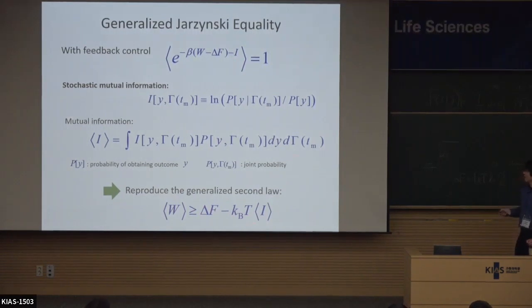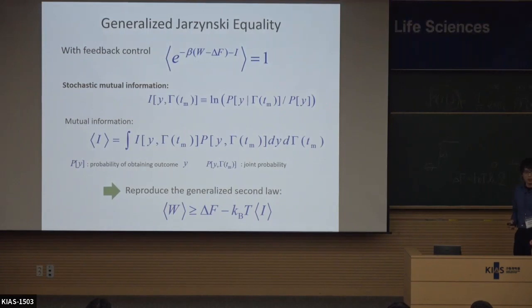We can say that this generalized Jarzynski equality is the most fundamental one for understanding the role of Maxwell's demon in the presence of feedback control.